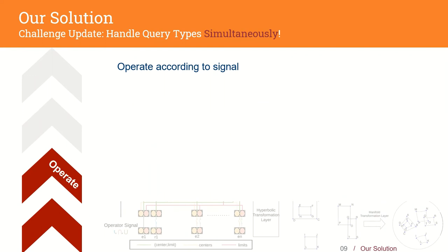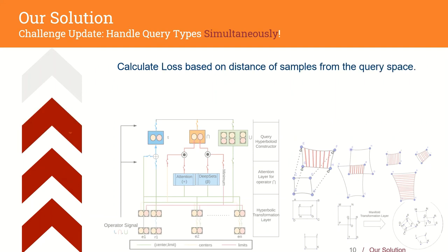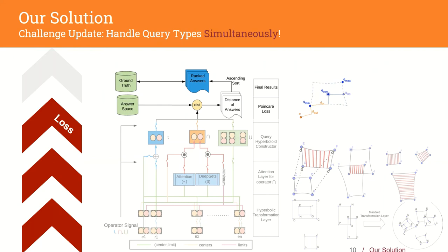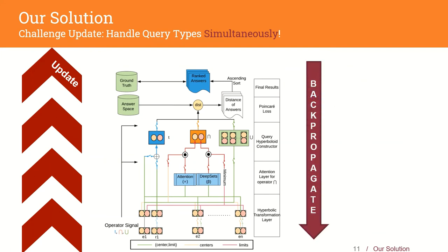According to this signal, the model processes the transformed embedding into a query space. In case of translation, it adds the head entity to a corresponding relation; in case of intersection, it returns the overlapping space; or in union, it returns the set of all hyperboloids. Next, we calculate the distance of all positive samples and negative samples from the query space. This is done with a hyperbolic version of L1 norm. We calculate two distances for each entity: one from the center and another from the limit of the hyperboloid, combined with a fixed factor. The objective of our model is to learn representations such that positive samples move into the hyperboloid and negative samples move outside the hyperboloid. Next, we backpropagate through the loss to update our entity and relation embeddings.